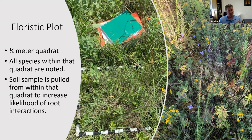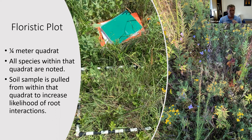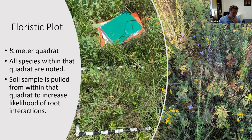An example of a floristic plot: we take a quarter-meter quadrat — I believe this is in Linden Prairie. We take all species within that quadrat, account for all of them, give them a coverage value. Then I pull the soil sample from inside that quadrat, which increases the likelihood of root interactions within the core I've pulled. I also want to thank Andrew Braun, who helped with a lot of these. You may notice little spikes in the amounts of data accounted for — that's mostly because Andrew was helping.